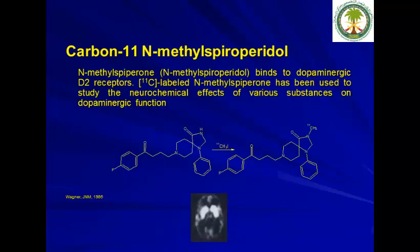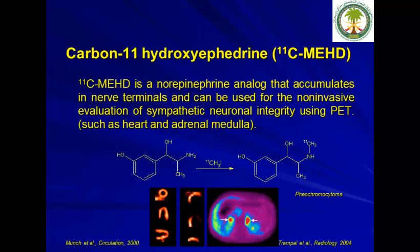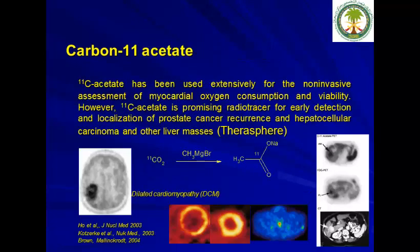Carbon-11 N-methylspiperone is another imaging agent for dopaminergic D2 receptors — a very old radiotracer not widely used anymore. Carbon-11 hydroxyephedrine (HED) is a norphenedrine analog that accumulates in nerve terminals and can be used for non-invasive evaluation of sympathetic neuronal integrity using PET, with straightforward production. Carbon-11 acetate has good application especially when using theraspheres for liver cancer treatment, and has shown to be a good imaging agent to assess treatment response.